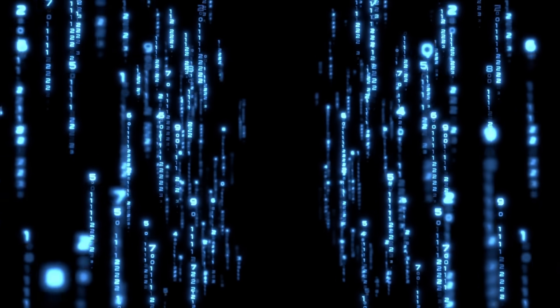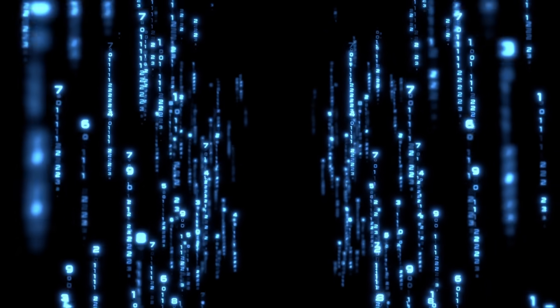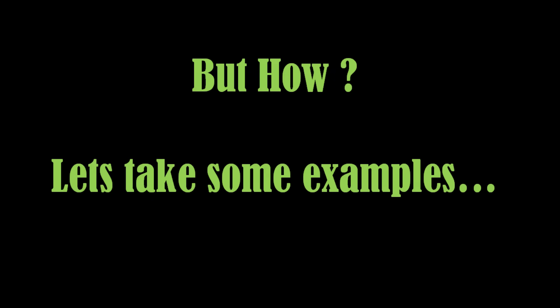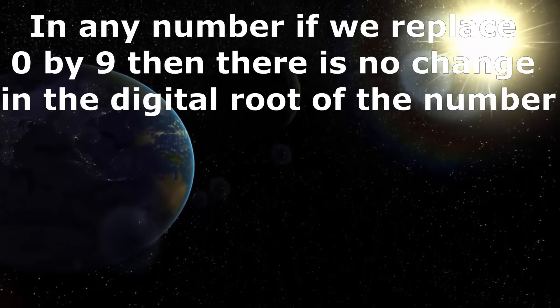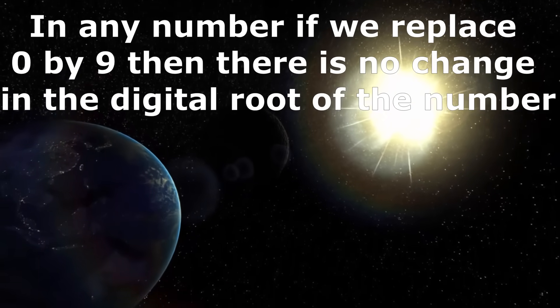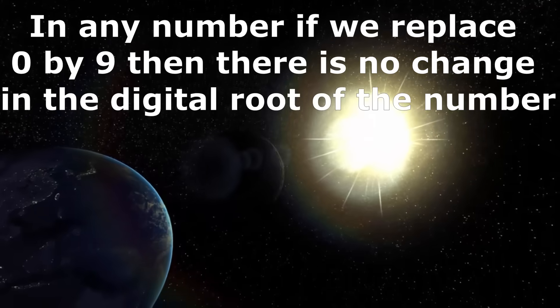Now, I will prove how number 9 represents everything and also nothingness. Actually, number 9 is same as number 0 in some sense. But how? Let's understand it. In any number, if we replace 0 by 9 then there is no change in the digital root of the number.